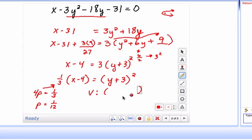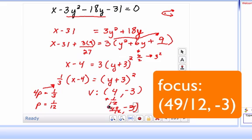So whatever the vertex is, I'm going to add 1 twelfth to the x coordinate. So the x coordinate is 4 and the y coordinate is a negative 3. And so I can think of 4 as 48 over 12, so that's 49 over 12 and a negative 3, and that's the focus.